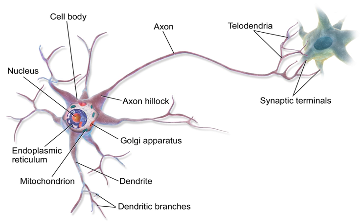Neurons can be classified according to their electrophysiological characteristics. Tonic or regular spiking: some neurons are typically constantly active, firing at a constant frequency — for example, interneurons in the neostriatum. Phasic or bursting: neurons that fire in bursts are called phasic. Fast spiking: some neurons are notable for their high firing rates — for example, some types of cortical inhibitory interneurons, cells in globus pallidus, and retinal ganglion cells.